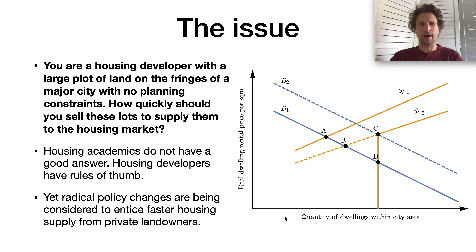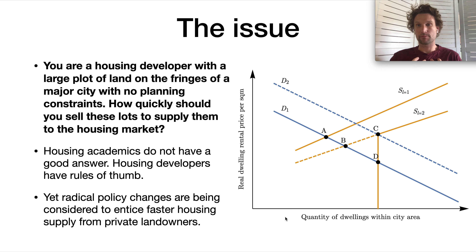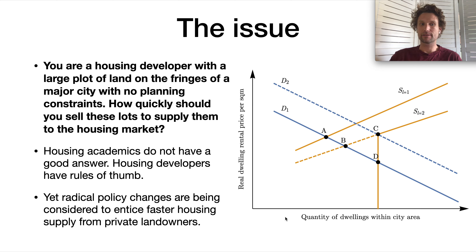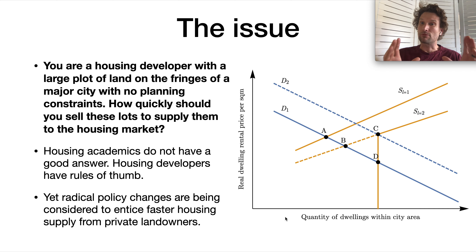The motivating puzzle is: you are a large housing developer with a plot of land on the fringes of a major city with no planning constraints. How quickly should you sell these lots to supply them to the housing market? Housing academics do not have a good answer for this question. Housing developers from my experience working in the industry have rules of thumb about how quickly to sell and when to put prices up or down. Yet despite this limited knowledge, radical policy changes are being considered in cities across the world to entice faster supply from landowners — puzzling, because we don't really know what factors affect this rate per period of time.